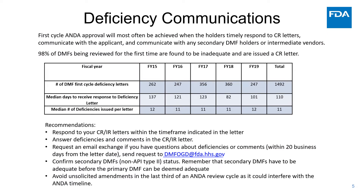Deficiency communication is sent out when an assessor has technical issues with your DMF submission that need to be addressed before the DMF can be considered adequate. There are two types of letters that can be received by a holder. The first and most common is a complete response letter, a CR. The second is an informational request, an IR letter. The main difference between these two types of letters is their timeline. A CR letter usually requires a response within 30 days, whereas an IR is usually on a shorter timeframe, about two weeks.